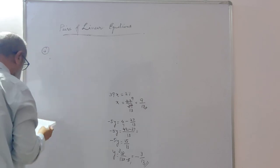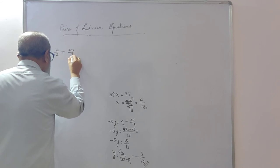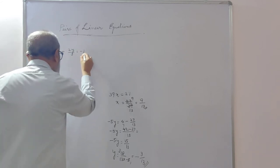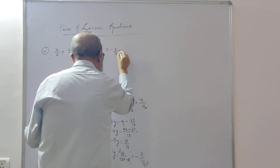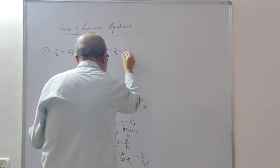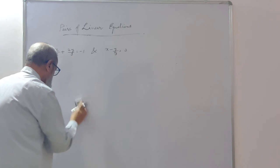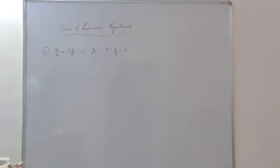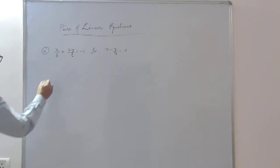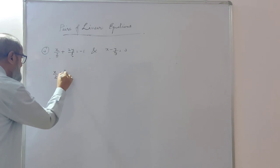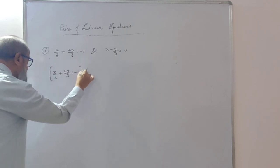The fourth problem is: x/2 + 2y/3 = minus 1, and x minus y/3 = 3. First we need to eliminate the denominators. For the first equation, the LCM of 2 and 3 is 6, so multiplying through by 6 gives 3x + 4y = minus 6. For the second equation, multiplying by 3 gives 3x minus y = 9.